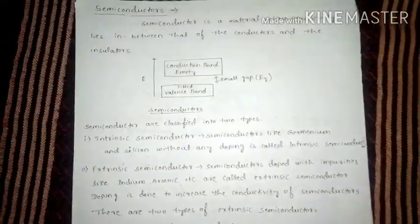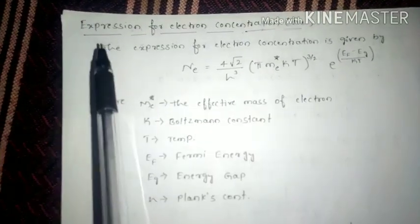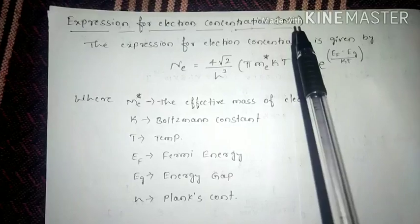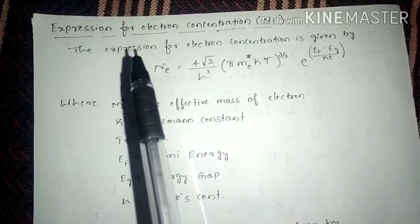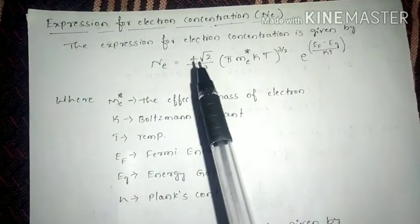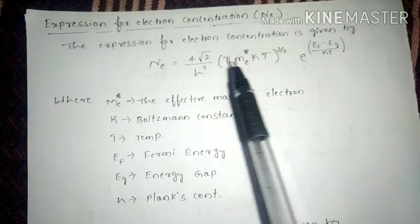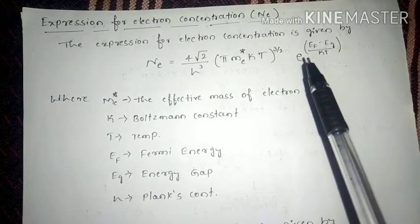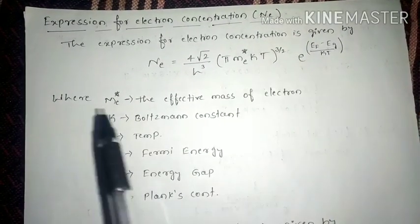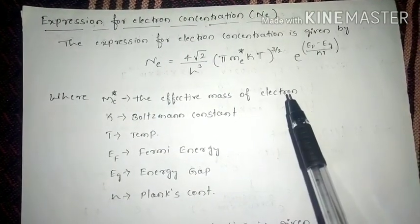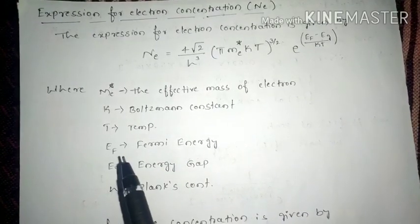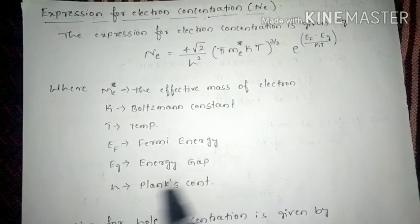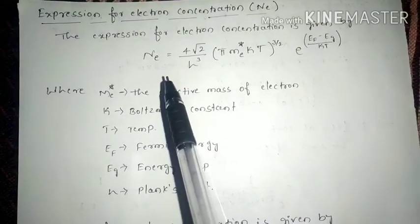That covers the basics of semiconductors. Now we are going to have the expression for electron concentration NE. The expression for electron concentration is given by: NE equals 4√2 divided by H³, times (π · mE* · K · T)^(3/2), times e^((EF − EG) / KT). Where mE* is the effective mass of electron, K is the Boltzmann constant, T is the temperature in absolute scale, EF is the Fermi energy, EG is the energy gap, and H is Planck's constant.